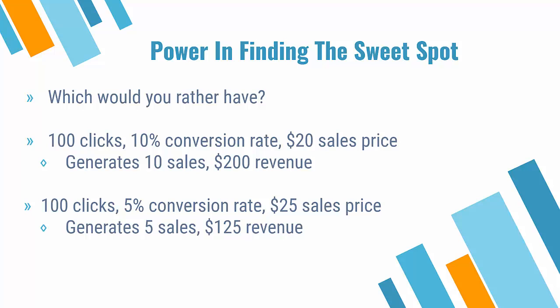Take a look at these two examples. In both cases, you're getting a hundred clicks sent to the website. In one case, you have a 10% conversion rate with a $20 sales price. In the other example, you have a 5% conversion rate — a lower conversion rate — but a higher sales price. You don't need to have any opinion on this; the data speaks for itself. You'd obviously rather generate 10 sales and make $200 in revenue as opposed to only generating five sales at $125 in revenue. A higher price doesn't always mean more money because conversion rate plays such an important role. So we need to find that sweet spot of your pricing.